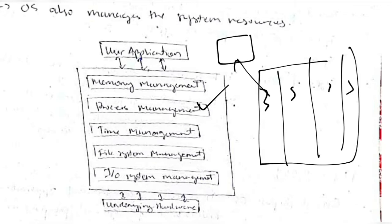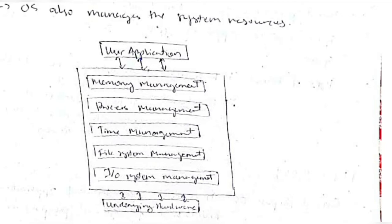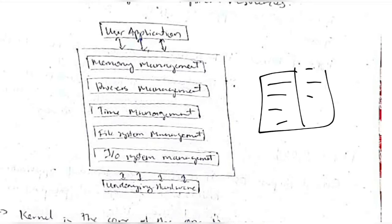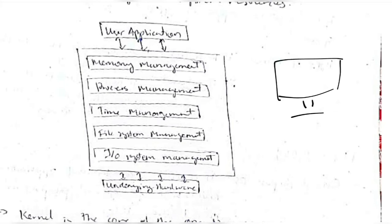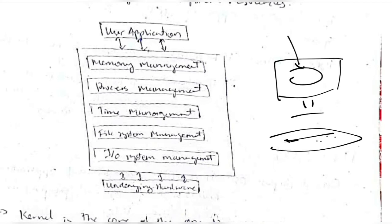Process management handles conflicts when two or more processes need the same data. Time management determines how much time each process should be given. File management organizes data stored in the file system (a subset of memory). Input/Output system management handles simultaneous input from keyboard/mouse and output to the screen, all managed efficiently by the Operating System.